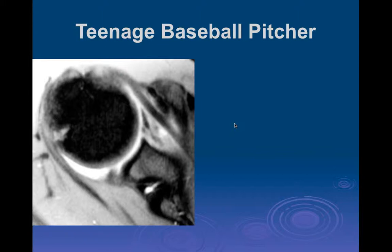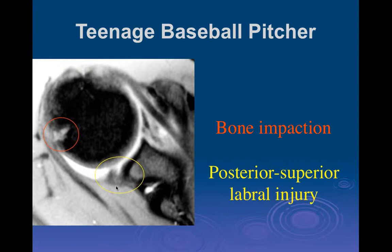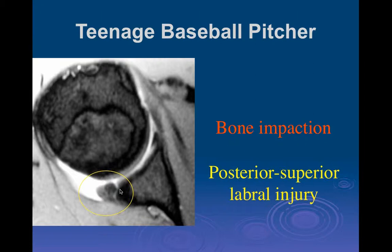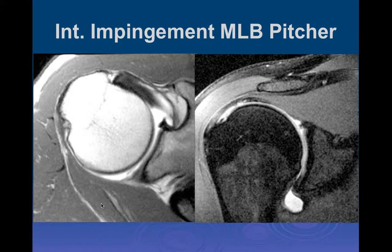Here's another teenage baseball pitcher. We can see marrow edema at the impaction site on the posterior aspect of the greater tuberosity, and a posterior superior labral tear. This is a slightly more severe example where you can see the labral tear going all the way through and an abnormal morphology of the posterior labrum due to chronic repetitive trauma. There's a much more normal anterior labrum in comparison. So there are a lot of reactive changes due to the repetitive trauma from posterior impingement.